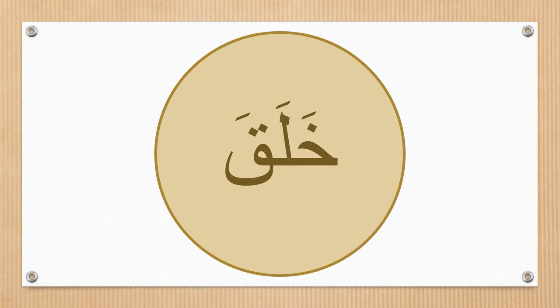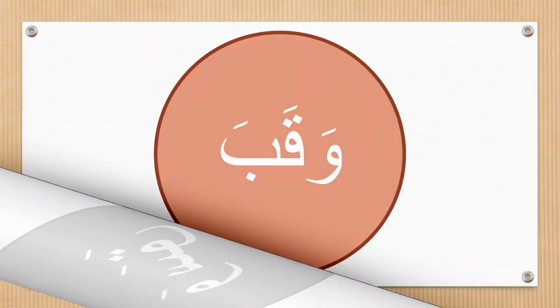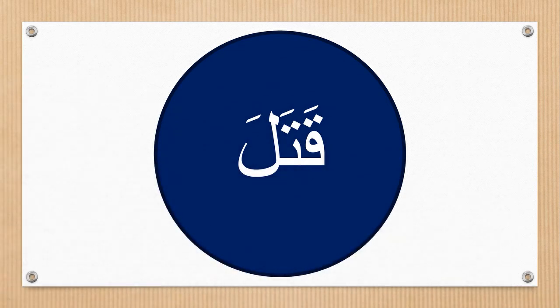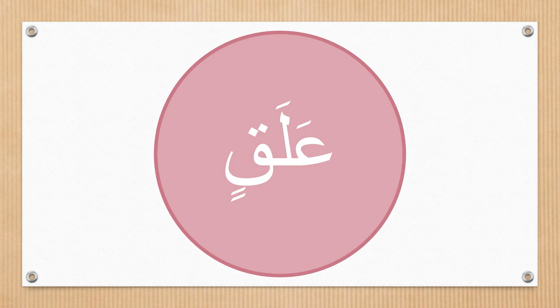Don't say 'kha laa qa' with a heavy laam. The correct word is 'kha la qa' with laam light. In this word, there is no madd letter so all letters will be single count: wa sa qa. Again in this word every letter will be single count: wa qa ba. Make sure your ba is light — wa qa ba, ba has to be light. Qa ta la — ta and laam have to be light, only qaf will be heavy: qa ta la. Make sure your ayn is not a hamzah.